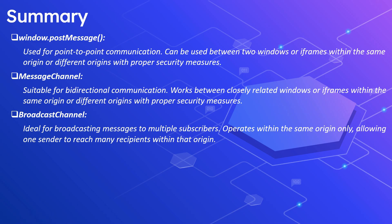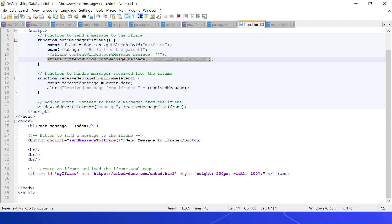In summary: window.postMessage is used for point-to-point communication between two windows or iframes, within the same or different origins with proper security. MessageChannel is suitable for bidirectional communication between closely related windows or iframes, within the same or different origins with proper security. BroadcastChannel is ideal for broadcasting messages to multiple subscribers, operating within the same origin only — one sender reaching many recipients.